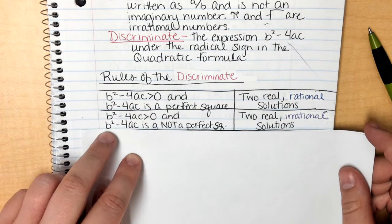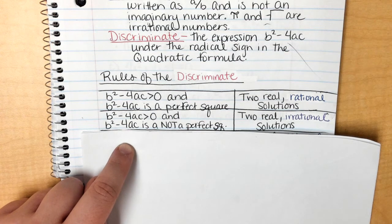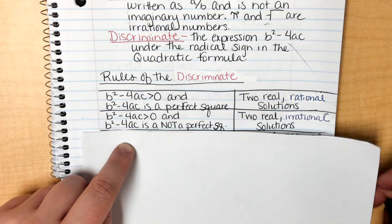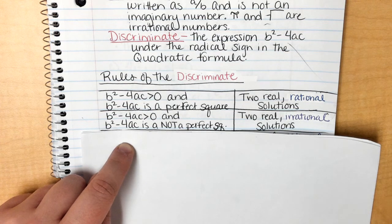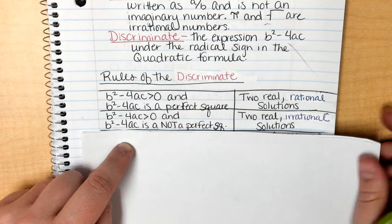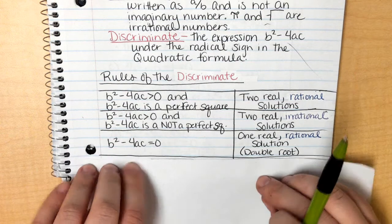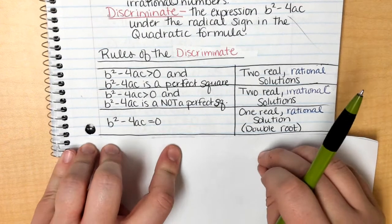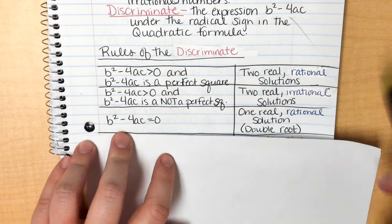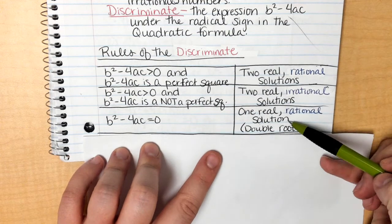If it is the same thing, if it's still greater than 0, but if I take the square root of it and it gives me a decimal, then I still have two real answers but they're considered irrational because it would be left as a square root. If it equals 0, so say we've got b squared minus 4ac and when I simplify it it gives me 0, then I have one real rational solution. It is considered a double root.